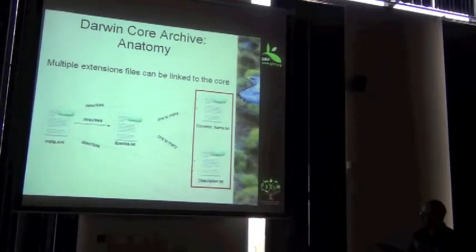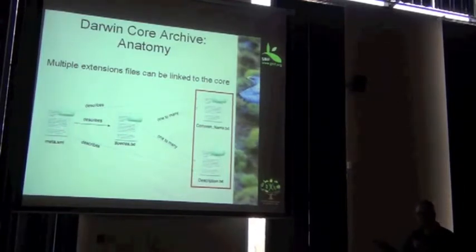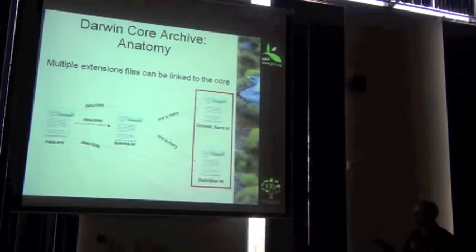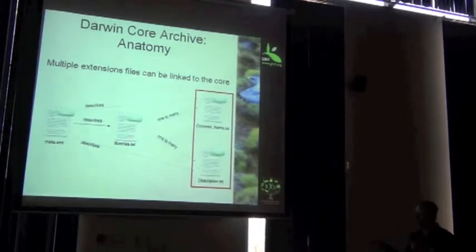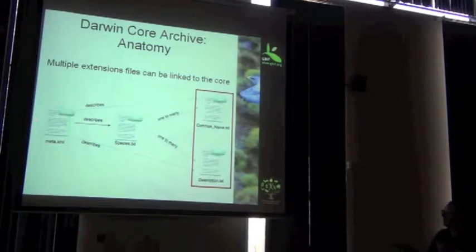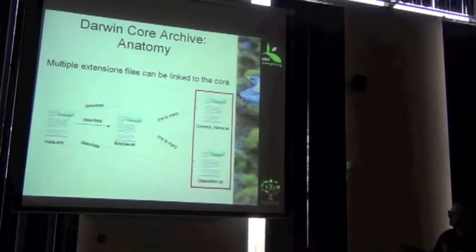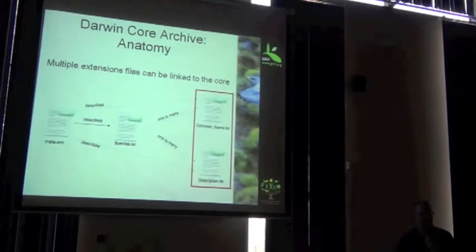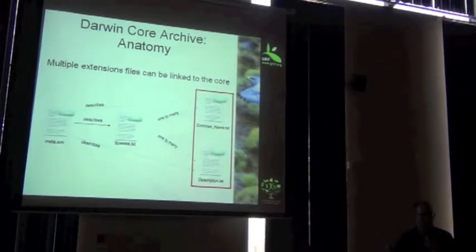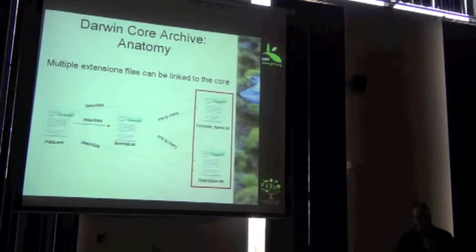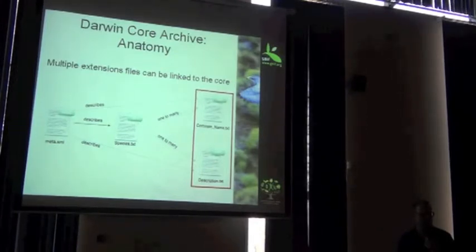To fill out the example a little bit more, I've included another extension file called descriptions. Imagine you've got multiple descriptions about each taxon ID. You've got a meta file. You've got to have a meta file describe which Darwin Core term is related to which columns inside your species file. The meta.xml file does the same thing for the extensions file. So this is just a large mapping file, and it relates to all the core files and extension files inside your archive.